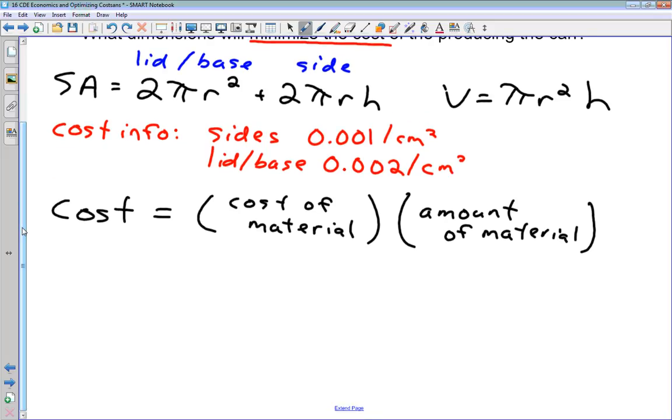How do we work this cost information into our surface area formula to get our cost function? If we're building something, the cost is always going to be the cost of the material times the amount of material. In this situation, we have cost for two separate things, and we have a surface area formula that splits nicely into two separate things. For the lid and the base, the cost of material is 0.002 and the amount of material we need is 2πr². For the sides, the cost of material is 0.001 and we need 2πrh of it.